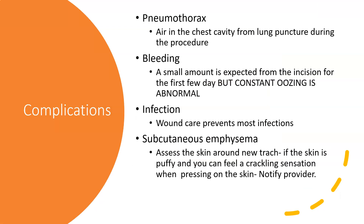Complications include: pneumothorax, where air enters the chest cavity from a lung puncture during the procedure. They can also have bleeding — a small amount is expected from the incision for the first few days, but constant oozing is abnormal. Any surgical incision carries a risk of infection. They can also have subcutaneous emphysema, where air gets underneath the skin from the new tracheostomy, causing puffing and a crackling sensation when you press on the skin. This can occlude the airway, and you want to notify the physician immediately.